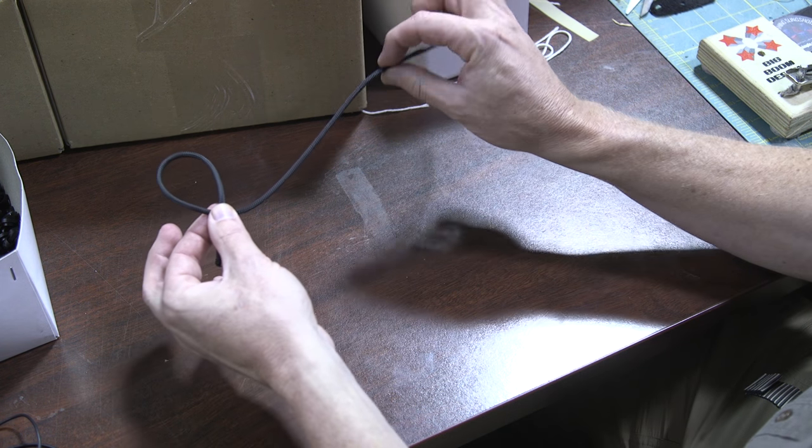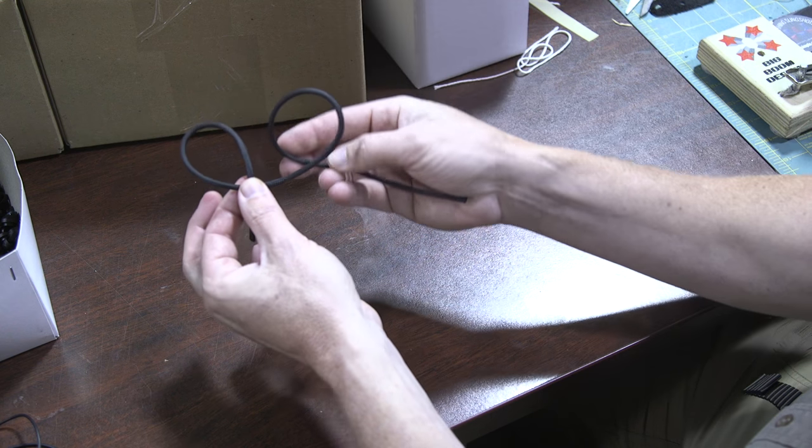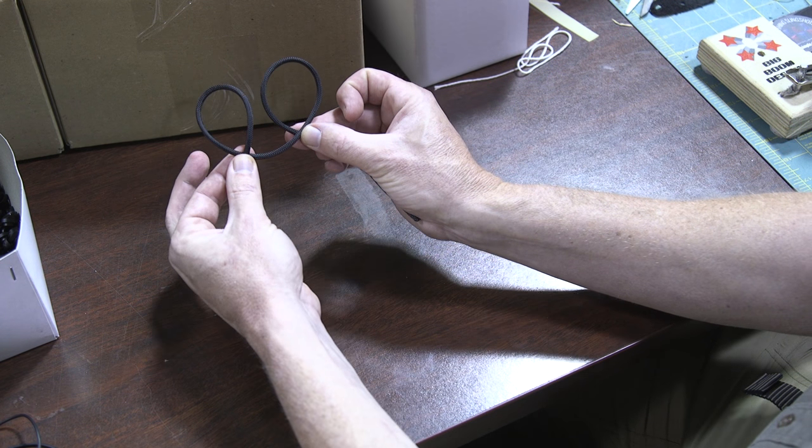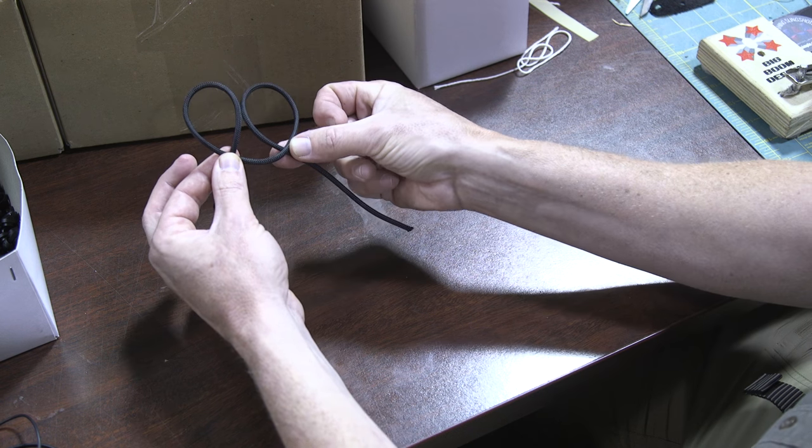Make another loop with the right hand tag end on the underside of the loop. Now you have a loop with the tag end one on top, one tag end on the bottom.